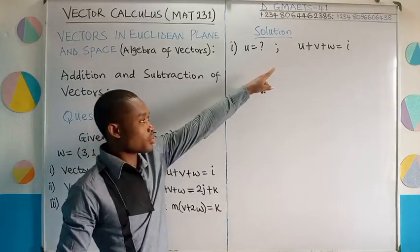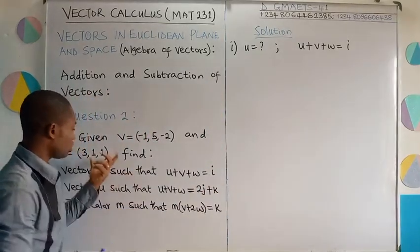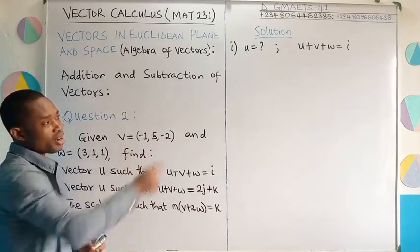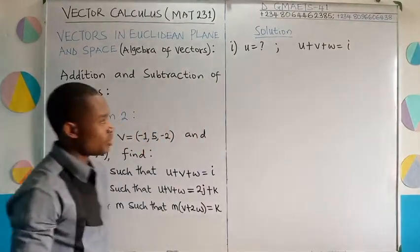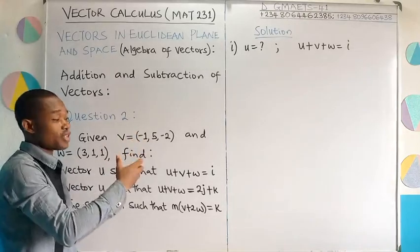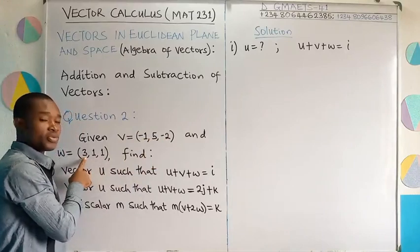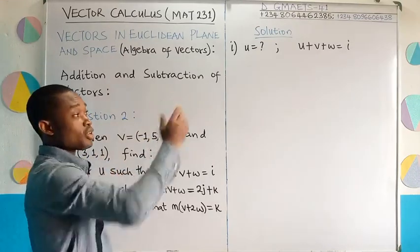All I have to do here is substitute the value of vector v and vector w which were given to me from the question. But because this is equal to a unit vector i, it simply means that I would have to deal with this in terms of their specific unit vectors. This would be -i + 5j - 2k. This would be 3i + j + k. Are you following? And then solve.